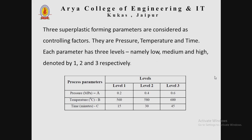For example, suppose three super plastic forming parameters are considered as controlling factors: pressure, temperature, and time. Each parameter has three levels — low, medium, and high — where level 1 indicates low, level 2 is medium, and level 3 is high. We can then calculate all parameter combinations.